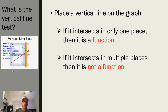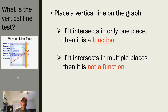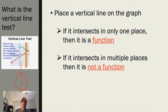Looking at the equation over here, this red line would be a function because it passes the vertical line test — when we place a vertical line on the graph, it only crosses at one spot. Here is another graph: if we do the vertical line test and draw a vertical line, notice that it intersects in two spots — multiple places on this graph — so this would not be considered a function.